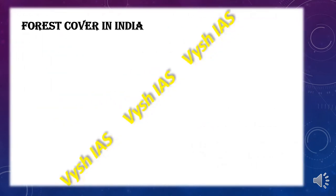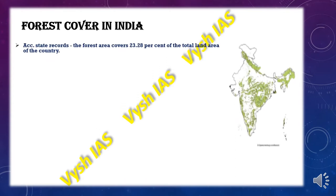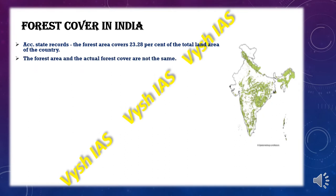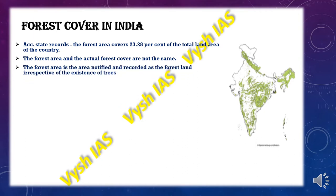The forest cover of India, according to state records, is 23.28% of the total land area in the country. There is a difference between forest area and the actual forest cover. The forest area is the area which is notified and recorded as forest land, irrespective of whatever trees are found in this area. Whereas the actual forest cover is the area which is occupied by the forest with the canopy.